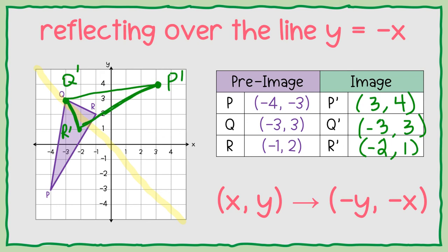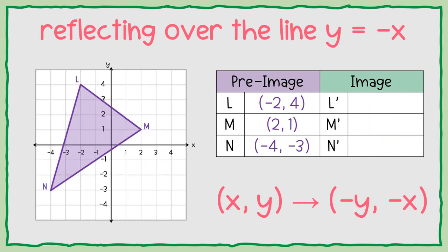Let's do one more example. Reflect over the line y equals negative x. So again, this is that diagonal that starts on the top and goes through the origin to the bottom. We are switching places here. So for point L, instead of being negative 2, 4,